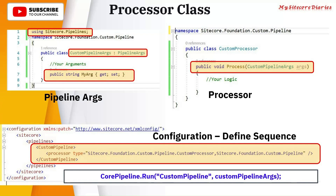If you want to invoke the pipeline at runtime programmatically, you can use CorePipeline.Run(), where you provide the pipeline name and the argument. This is how you can programmatically invoke the pipeline.